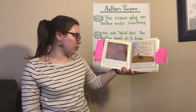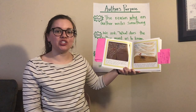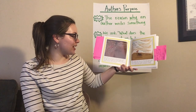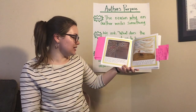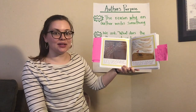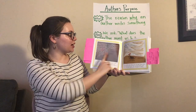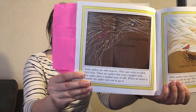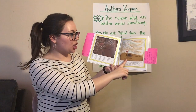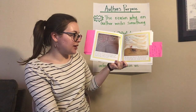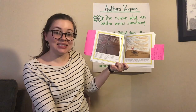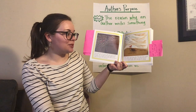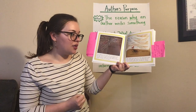Some spiders are web weavers — they spin webs to catch their food. There are spiders that weave tangled webs; the spider spins a tangled mass of silk, and when an insect is trapped the spider runs out to get it. That's called a house spider — I can tell from the label on the illustration. This is a cardinal spider. Other spiders weave sheet webs; the spider hangs upside down beneath the web, and when an insect hits the sheet web the spider quickly pulls it through the webbing.